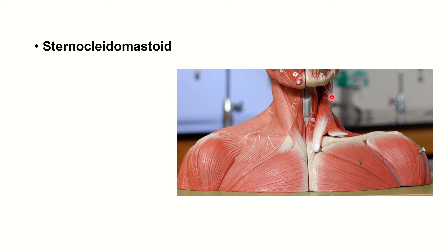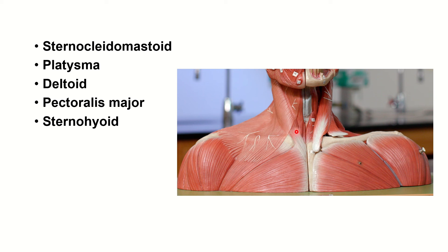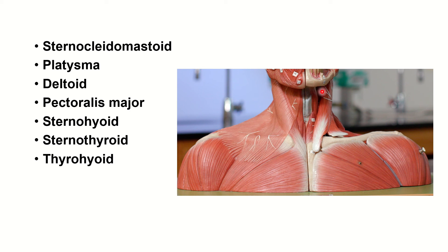Different model but the same muscles of the neck area. Sternocleidomastoid is here, and on this model it's covered by a flat muscle called platysma, which is more superficial and sits on top of the sternocleidomastoid. Deltoid and pectoralis major are not head and neck muscles but they're visible on this model, so I labeled them. Sternohyoid, sternothyroid — you can see the thyroid cartilage here — and thyrohyoid going from the thyroid cartilage to the hyoid.